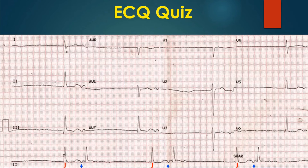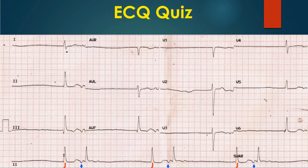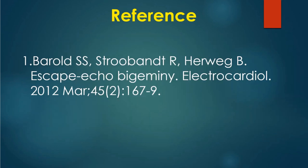In escape echo bigeminy, the second beat is an echo beat rather than a sinus beat. The inverted p-wave preceding the second QRS could be retrograde activation of the atrium from the preceding QRS. In that case, the initial QRS becomes a low junctional beat with a retrograde p-wave occurring after the QRS. This p-wave is then conducted back into the ventricles, producing the next beat — the echo beat — making this escape echo bigeminy, a very rare variety. Here is a journal reference on escape echo bigeminy.